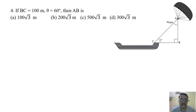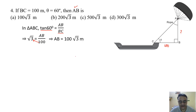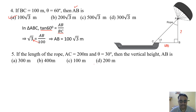Question 4: If BC = 100 meter and θ = 60 degrees, find AB. Using tan 60° = AB/BC: √3 = AB/100. Cross multiplying gives AB = 100√3. The correct option is option C.